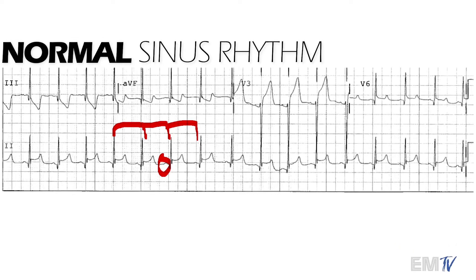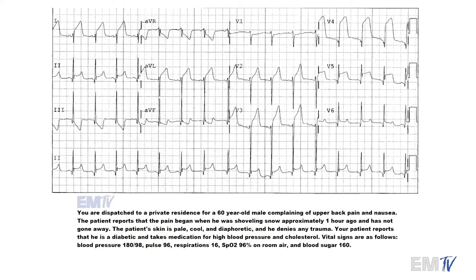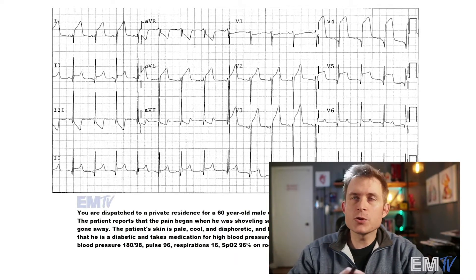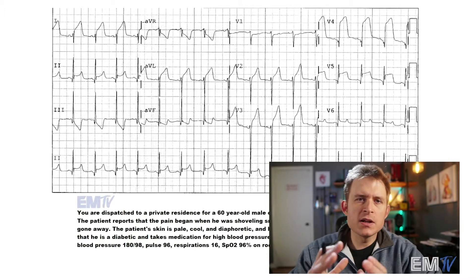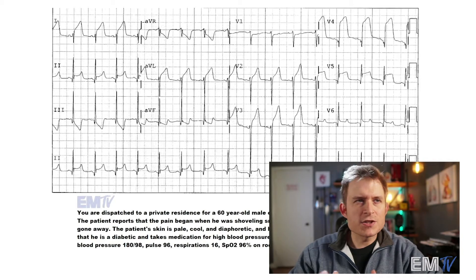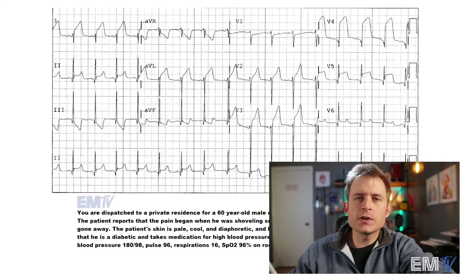Even if you've never really scrutinized 12-leads before, just looking at this one, it's really ugly and you know something is wrong. The way I prefer to get into the nitty gritty of 12-lead interpretation is to start with analyzing the anteroseptal leads — V1 through V4 — because these are correlated to the left anterior descending coronary artery, the LAD. An occlusion here is sometimes known as a widowmaker. I teach this as it's like an internet listicle: these are the top four reasons you're going to die, and they all involve the LAD.